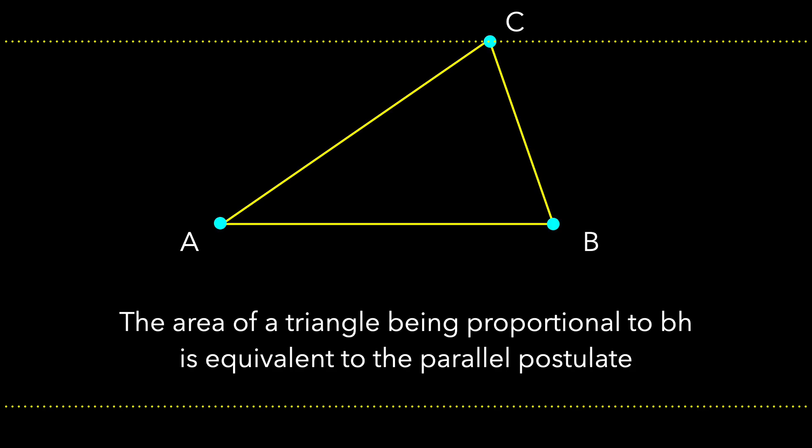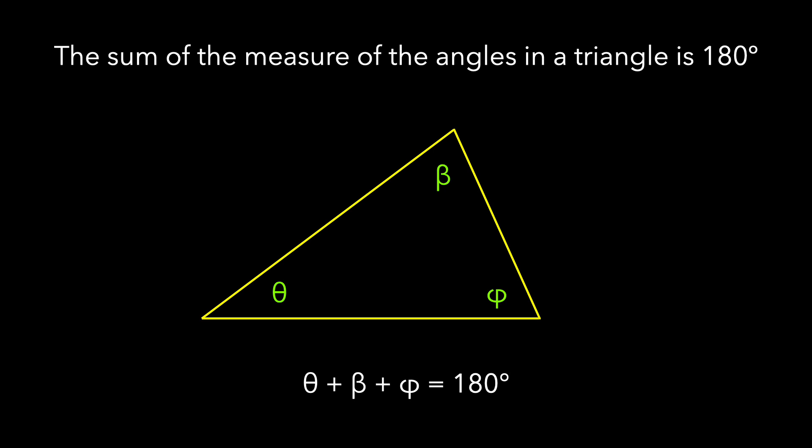In a plane, we also saw that the area of a triangle being proportional to the base times the height is equivalent to the parallel postulate. And we saw the sum of the measure of the angles in a triangle is 180 degrees. We'll look at area next time, but this time let's look at angles.